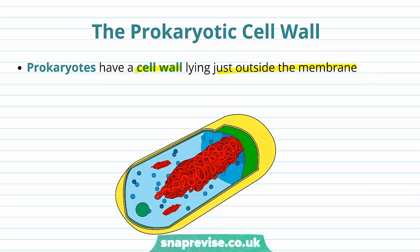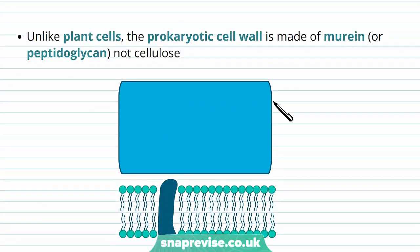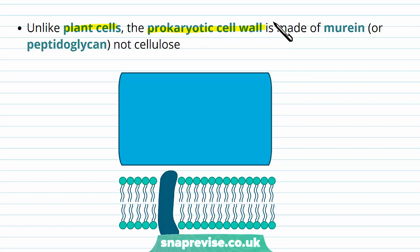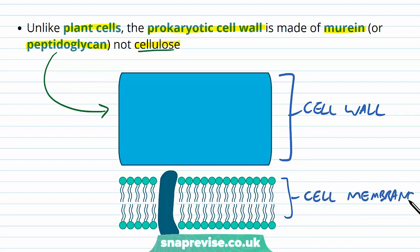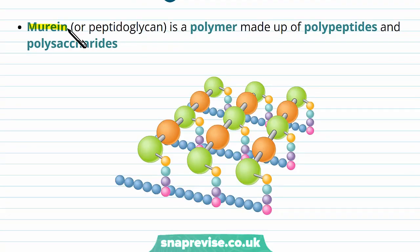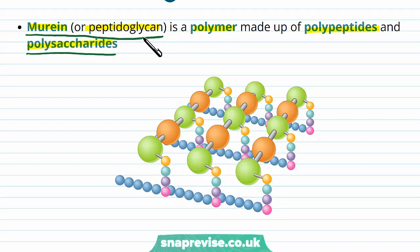Prokaryotes do have a cell wall, which is common in some eukaryotes like plants but absent in animals. The cell wall lies just outside the membrane, delineated here by the yellow color. It's the outermost structure usually, but it's made of something different — unlike plant cells, the prokaryotic cell wall is made of a polysaccharide known as murine, also called peptidoglycan, so make sure you realize these two are the same thing. Importantly, it's not made of cellulose — a plant cell wall is made of cellulose, but the prokaryotic cell wall is made of peptidoglycan.